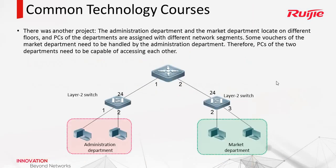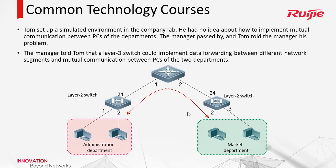Our engineer Tom received a new project. This time, the company requires him to make the administration department communicate with another market department. They are in different VLANs, and these two switches are layer 2 switches. Tom asked the manager, and the manager told him a layer 3 switch could implement this function.